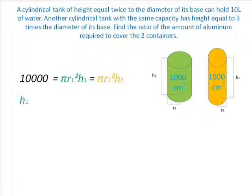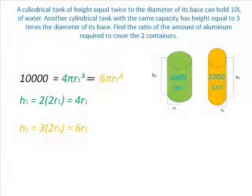Now, given the first height that is 2 times 2R1 will give us an answer that is equal to 4R1, and the height of the second cylinder is equal to 3 times 2R2, which will also give us an answer that is 6R2. Thus, 10,000 is equal to 4 pi R1 cubed and equal to 6 pi R2 cubed.